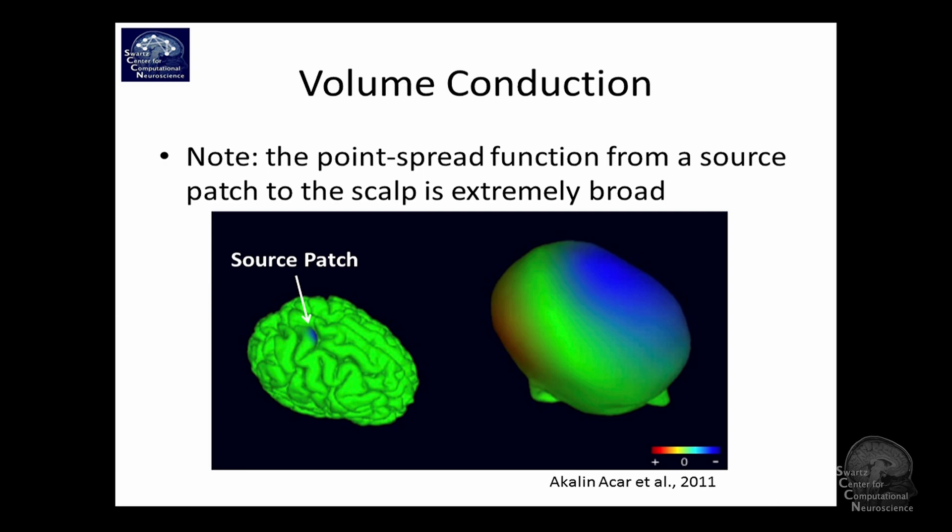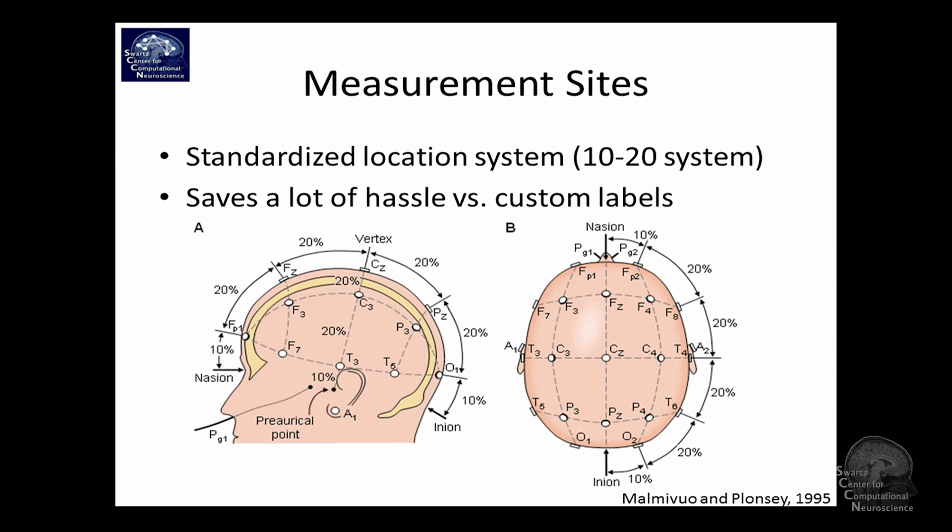So here's a nice picture, by the way, of this volume conduction. It's a simulation done in our lab. When you have a patch of cortex like here, this blue one, the source patch firing, this is on the head where you observe it. It's a very, very broad projection pattern. And it's not really intuitive. Here's, by the way, green is zero. Here's almost zero, and it's right above the patch. So that's just why it's statistically tricky to deal with that.